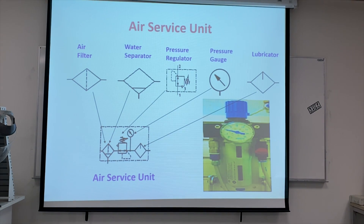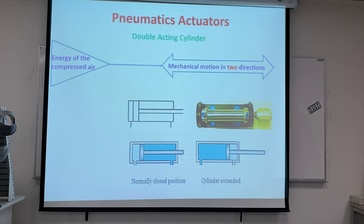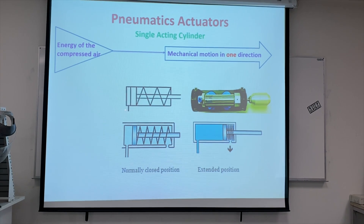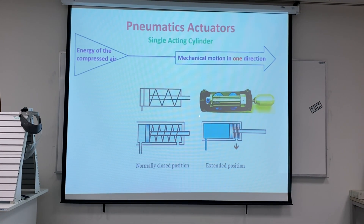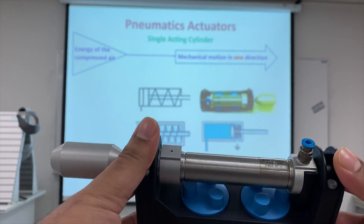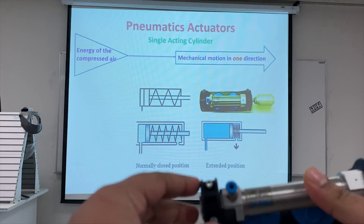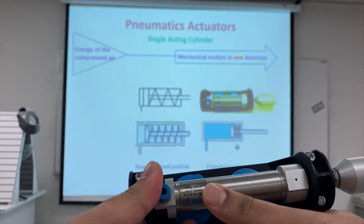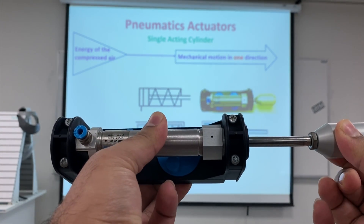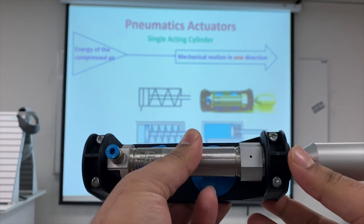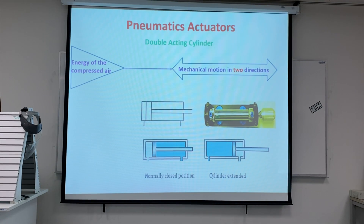In a single acting cylinder, we have one port. High pressure air enters through this port and pushes the piston. There is a spring inside, and the piston moves back and forth. The real component in front of you is the single acting cylinder — it has one port and a spring inside. When you put compressed air into this port, the piston extends. When you cut the air supply, the spring brings the piston back.